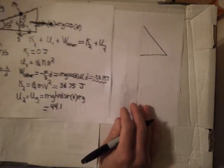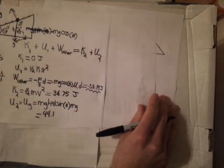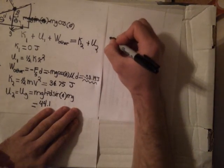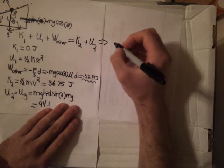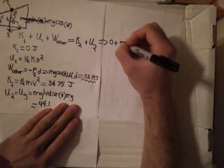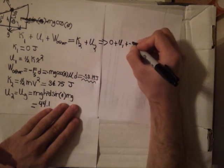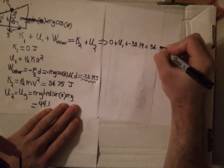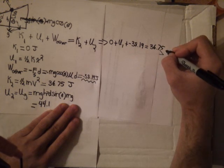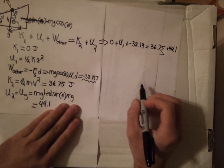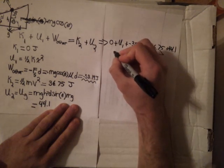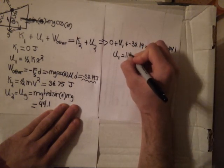Moving to a new page and plugging into the original work-energy theorem: KE1 is 0, plus PE1 (unknown — what we're looking for), plus work other of negative 38.19 joules, equals KE2 of 36.75 joules, plus PE2 of 44.1 joules. By simple algebra, we find that the potential energy at point 1 — the initial spring potential energy — is equal to 119 joules.